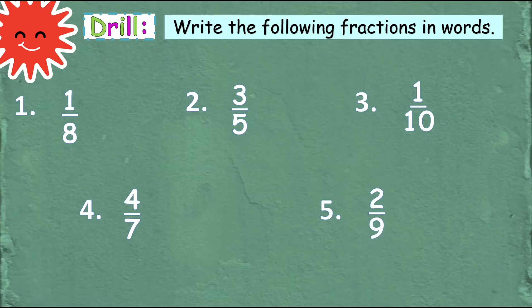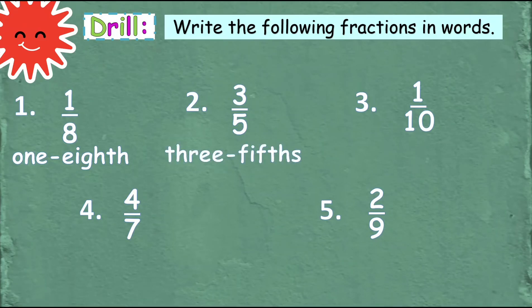Okay, so try to read the fractions and then write it in words. Okay, for number 1, how do we write that? Yes, it's 1 eighth. We say 1 eighth. And that's how we write 1 eighth. Number 2, very good! It's 3 fifths. Correct. Number 3?